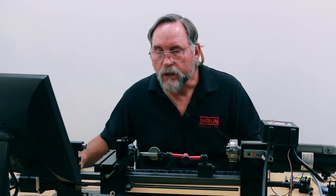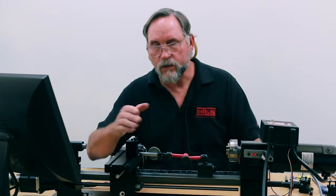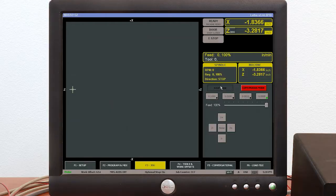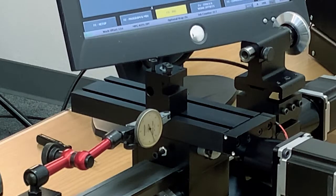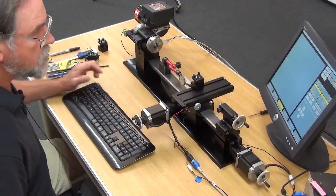If I jog my z-axis in you can see it's a pretty good relationship right there. And then what I would do is I'm on continuous, I would go to step mode and put it on ten thousandths and I'd step in until it starts to register on the indicator. Right there's a good register. So right now it's actually registered.